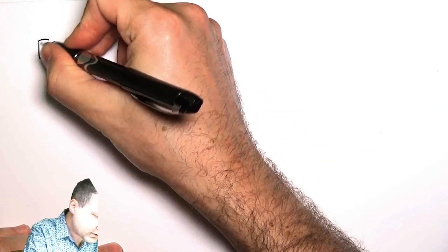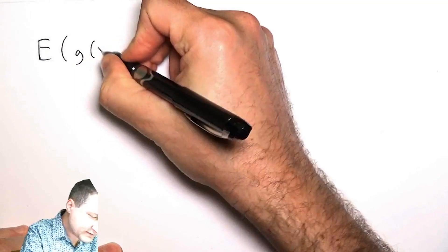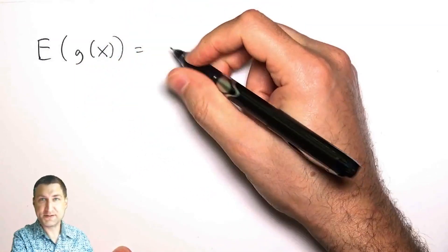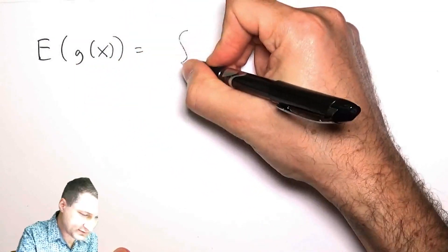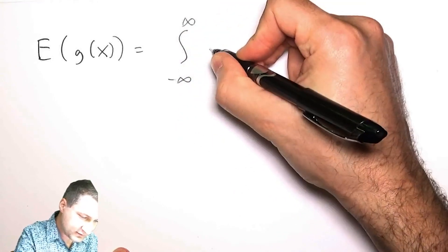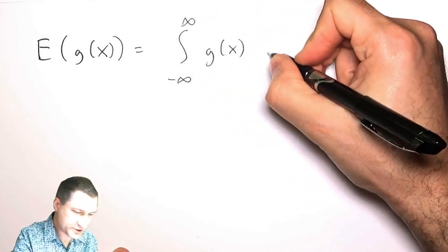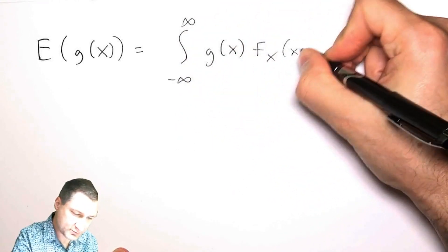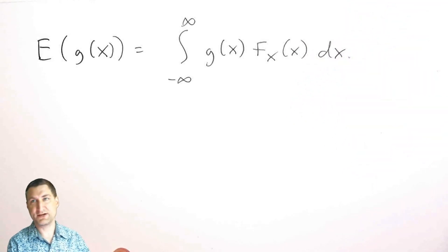So now we're ready to talk about how do you compute expected values involving joint random variables? Remember that in one random variable, we define the expected value as basically the integral of whatever function we have with respect to the PDF dx.